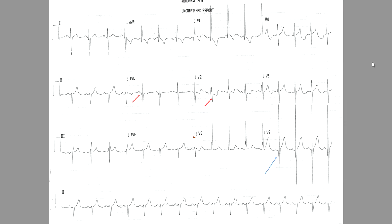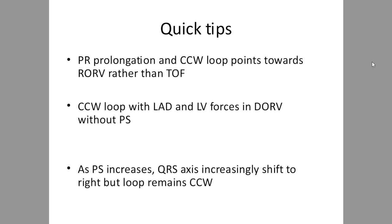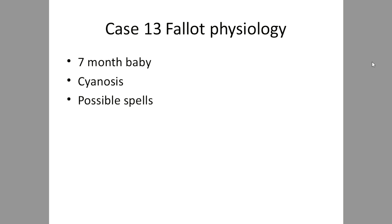Quick tips: PR prolongation with counterclockwise loop points toward DORV rather than TOF. Counterclockwise loop with left axis and LV forces suggests DORV without PS. As PS increases, RV hypertrophies and QRS shifts rightward, but the loop remains counterclockwise — your clue that this is not pure TOF. This patient had DORV with VSD and mild PS; saturation was very good and LV forces were prominent.